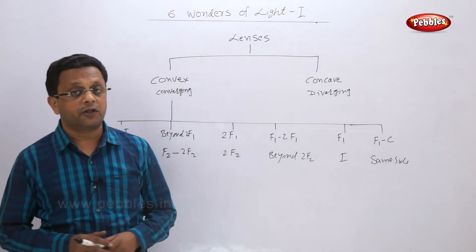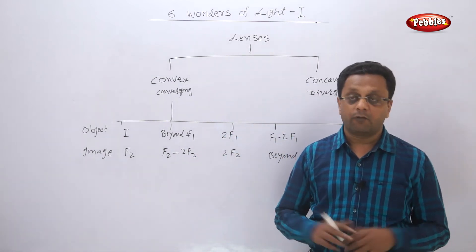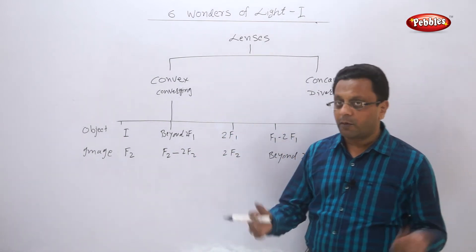We have seen myopia, hypermetropia, and presbyopia, and what lenses we use for that. For myopia we use concave lens, for hypermetropia we use convex lenses, and for presbyopia we use a combination of lenses or the bifocal lens.